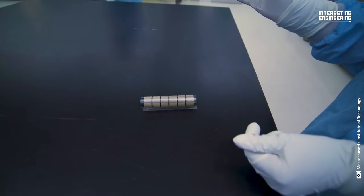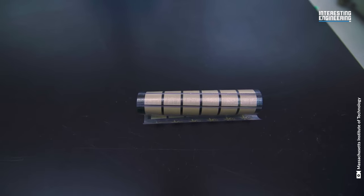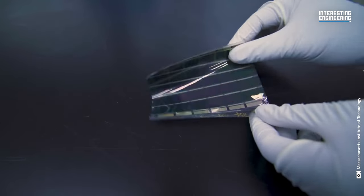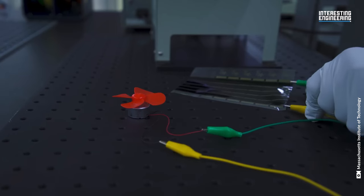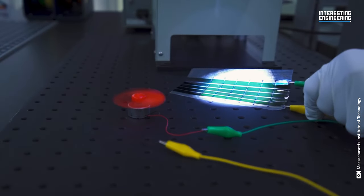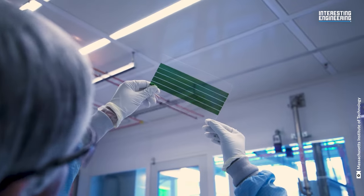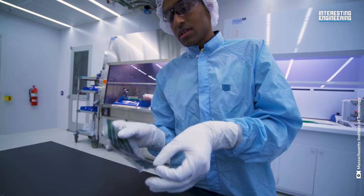Durability is another strong suit of these cells. Tests showed that even after rolling and unrolling a fabric solar panel over 500 times, the cells retained more than 90% of their initial power generation capabilities. The future of solar technology looks bright, thanks to innovations like these.